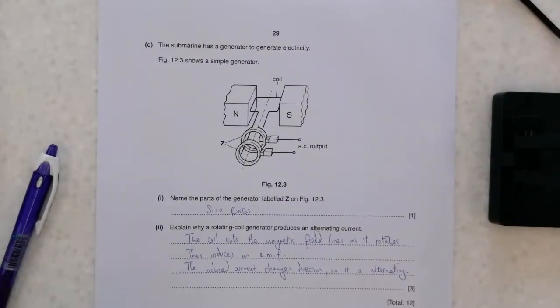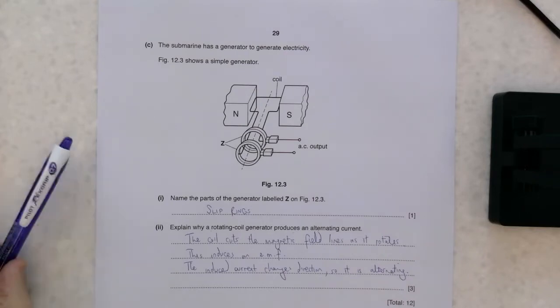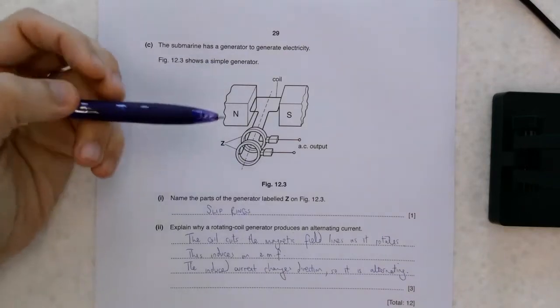Last part. Alright, we have not done this yet in class. I'm aware of that. However, it's something that we will be thinking about. This is what's called a generator. And it looks very much like a motor, which is something we'll talk about in the next couple of lessons. The motor and the generator are very similar things.